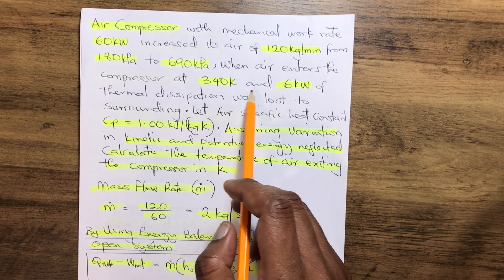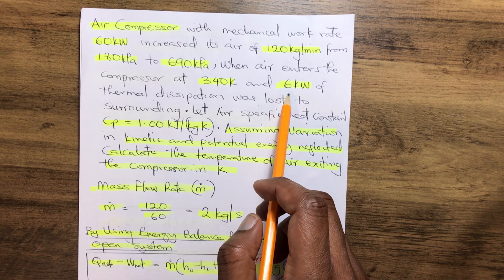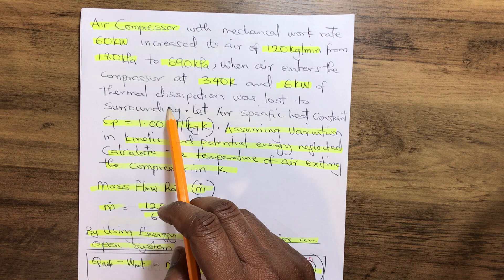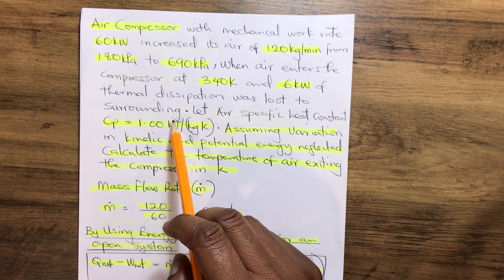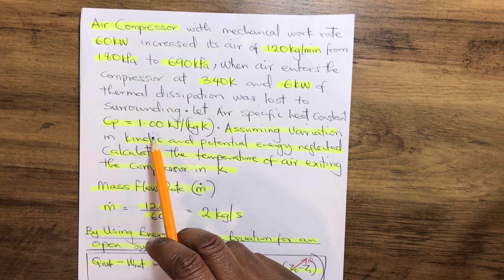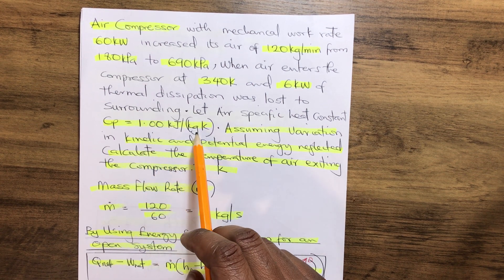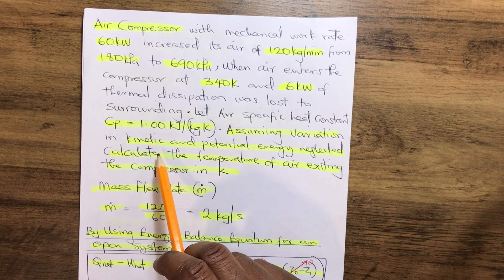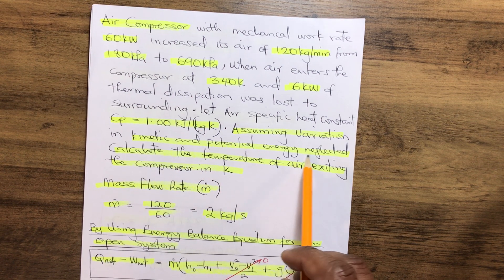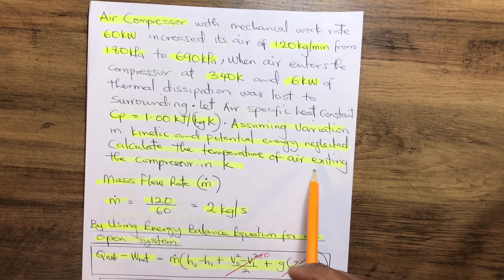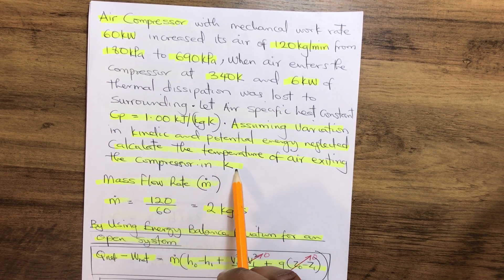At 340 kelvin and 6 kilowatts of thermal dissipation was lost to the surrounding, the air specific heat constant Cp equals 1.00 kilojoules per kilogram kelvin. Assuming the variation in kinetic and potential energy is neglected, calculate the temperature of air exiting the compressor in kelvin.